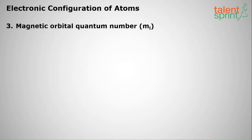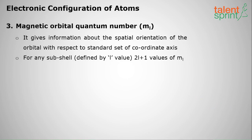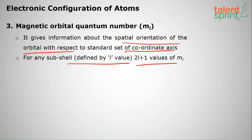The next quantum number is the magnetic orbital quantum number, ml. It gives information about the spatial orientation of the orbital with respect to a standard set of coordinate axes. For any subshell defined by l, there are 2l plus 1 values of ml. So ml always equals 2l plus 1, and l equals n minus 1.